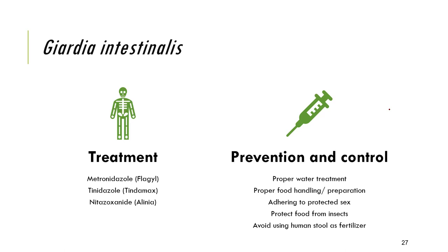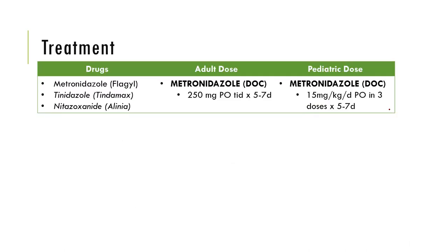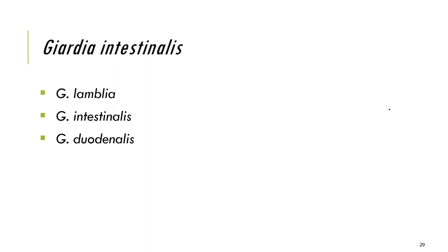Prevention and control includes proper handwashing, safe food handling, protecting food from insects, and avoiding use of human stool as fertilizer. The generic drug is metronidazole (brand name: Flagyl). The common names are Giardia lamblia, Giardia intestinalis, and Giardia duodenalis.